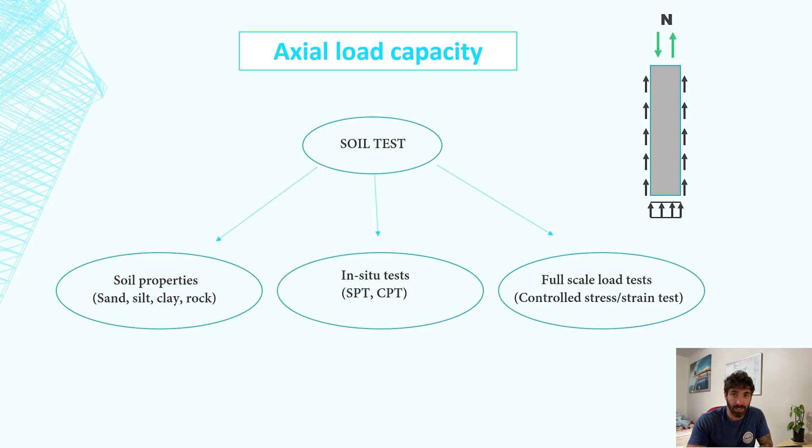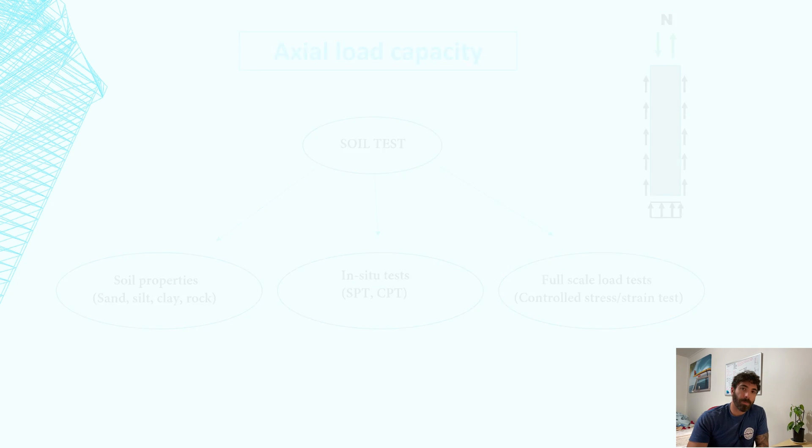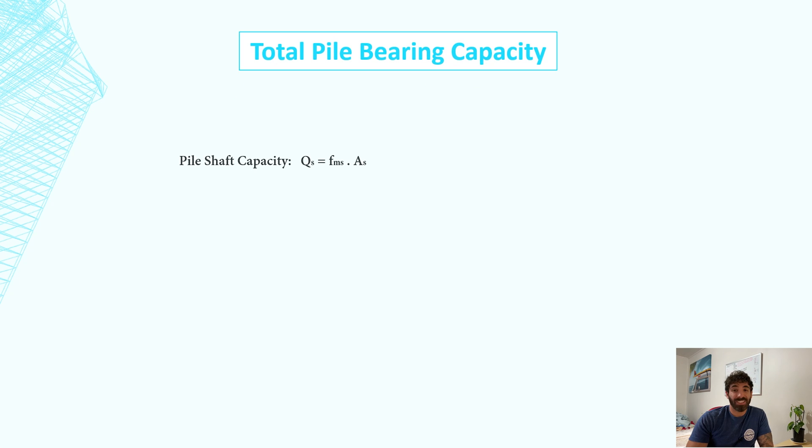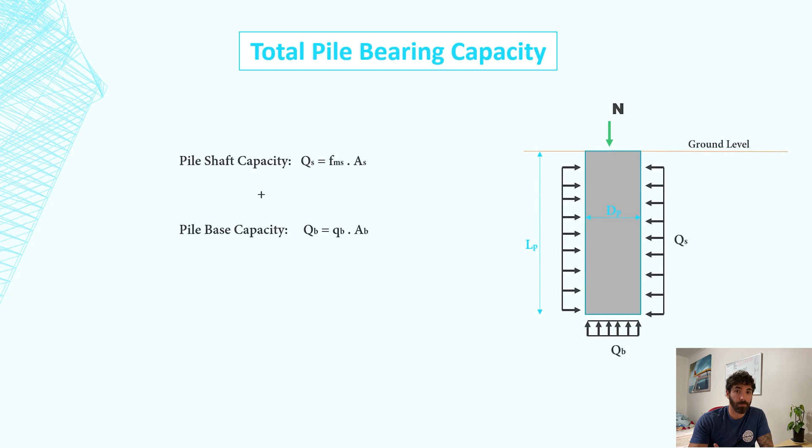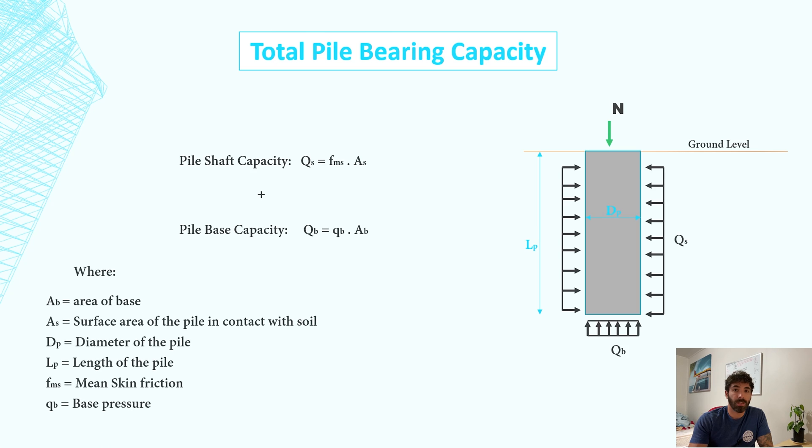The total pile bearing capacity is given by the shaft capacity plus the base capacity. The shaft capacity is given by the skin friction times the surface area of the pile in contact with soil, which is π times diameter times the length of the pile. The base capacity is given by the base pressure times the area of the base, which is π times D squared divided by 4.